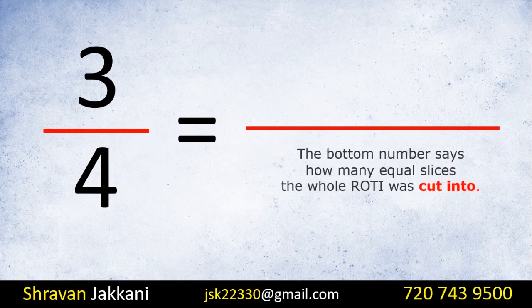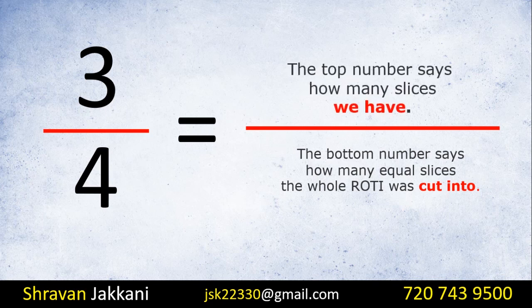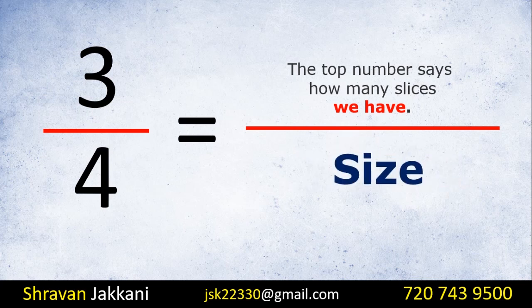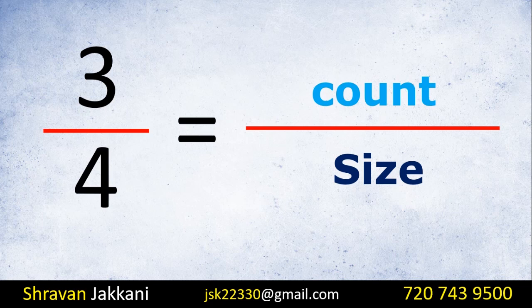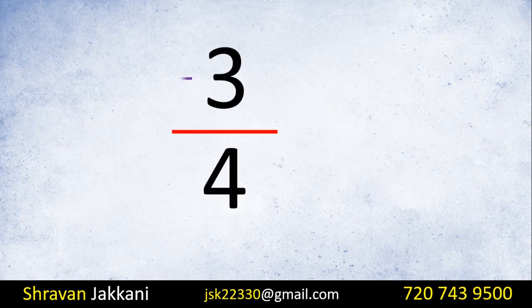The bottom number says how many equal slices the whole roti was cut into. The bottom number says how many slices we have. The equal parts or equal pieces — 3 divided by 4, 4 divided by 4, 5 divided by 4, 4 divided by 3.